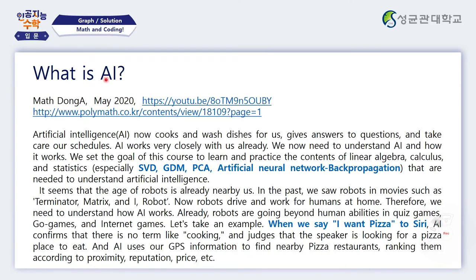What is artificial intelligence? I wrote a series of articles over about one and a half years for Mastunga that you can look at from this web address. Artificial intelligence now cooks and washes dishes for us, gives answers to questions, and takes care of our schedules. We need to understand AI and how it works. The goal of this course is to learn and practice linear algebra, calculus, and statistics — particularly singular value decomposition, gradient descent, principal component analysis, ANN, and back propagation needed to understand artificial intelligence.